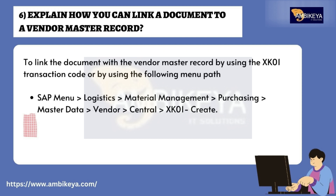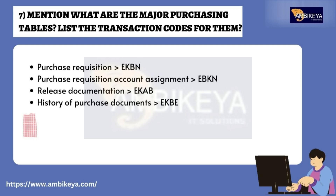Question number six: explain how you can link a document to a vendor master record. To link a document with the vendor master record, use the XK01 transaction code, or use the following menu path: SAP Menu > Logistics > Material Management > Purchasing > Master Data > Vendor > Central > XK01 > Create.